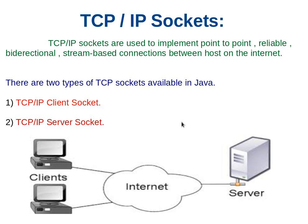Now let us understand TCP/IP sockets. TCP/IP stands for Transmission Control Protocol and Internet Protocol. These sockets implement a point-to-point, reliable, bi-directional, stream-based connection between hosts on the internet. There are two types of TCP sockets available in Java: the TCP/IP client socket and the server socket. As you can see from this diagram, multiple clients can be connected to the server via the internet.